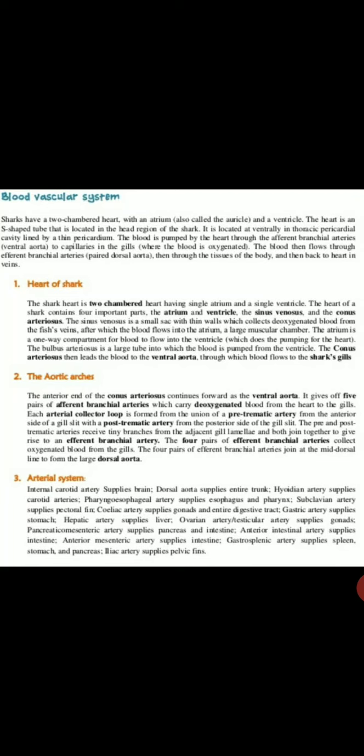The atrium is a one-way compartment for blood to flow into the ventricle. The bulbous arteriosus is a large tube through which the blood is pumped from the ventricle. The conus arteriosus then leads the blood to the ventral aorta, from which blood flows to the shark aorta.